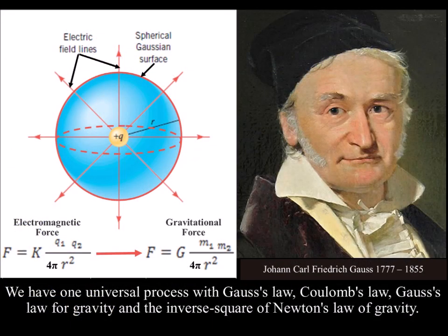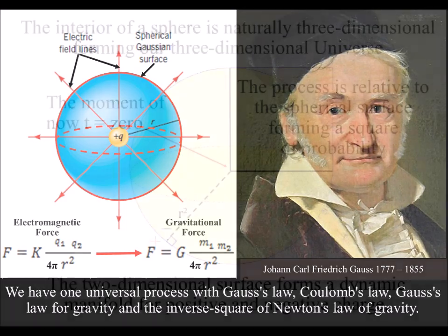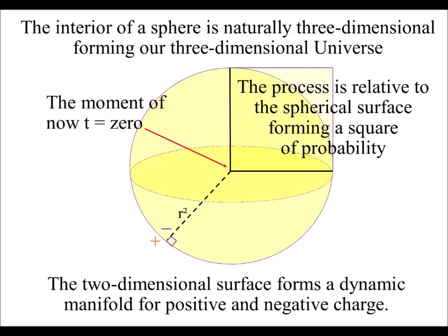The two-dimensional surface forms a dynamic manifold, with the outer surface forming positive charge and the inner concave surface forming negative charge. We have a geometrical process.